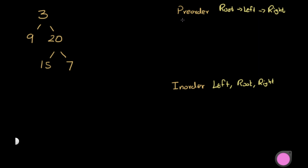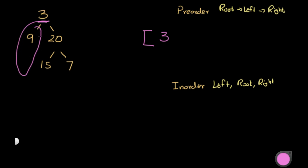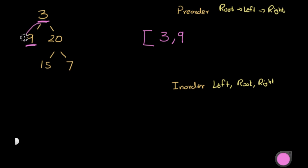Let's start with the pre-order traversal. We start at the top node, which is 3. The first thing we do is account for the root by writing the value 3. Then we go to the left of 3 — the entire left subtree — which here is just node 9. At 9, we account for the root. There's nothing on the left or right of 9, so we're done with the left subtree of 3.